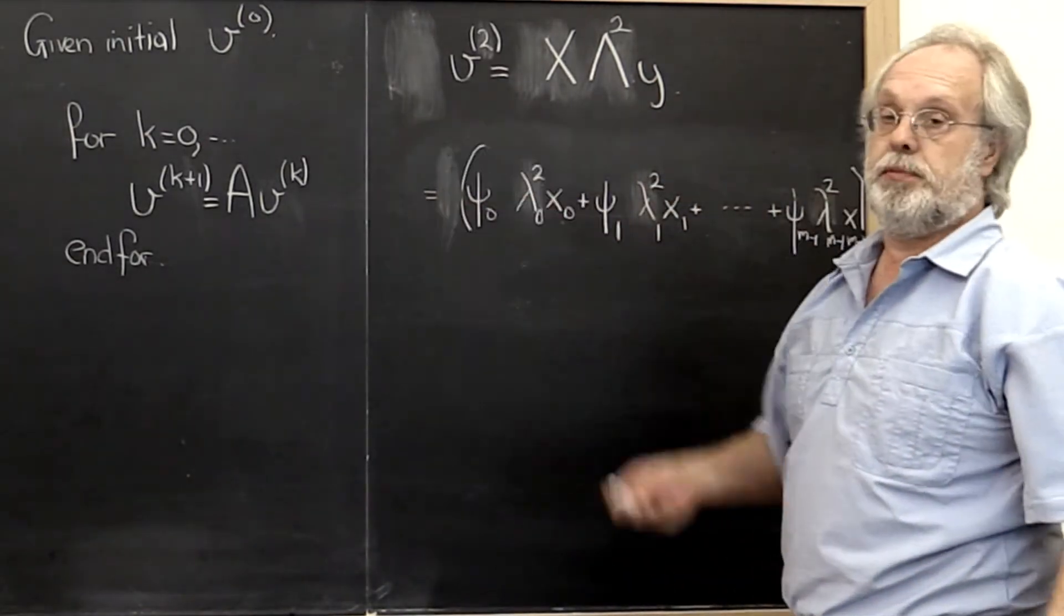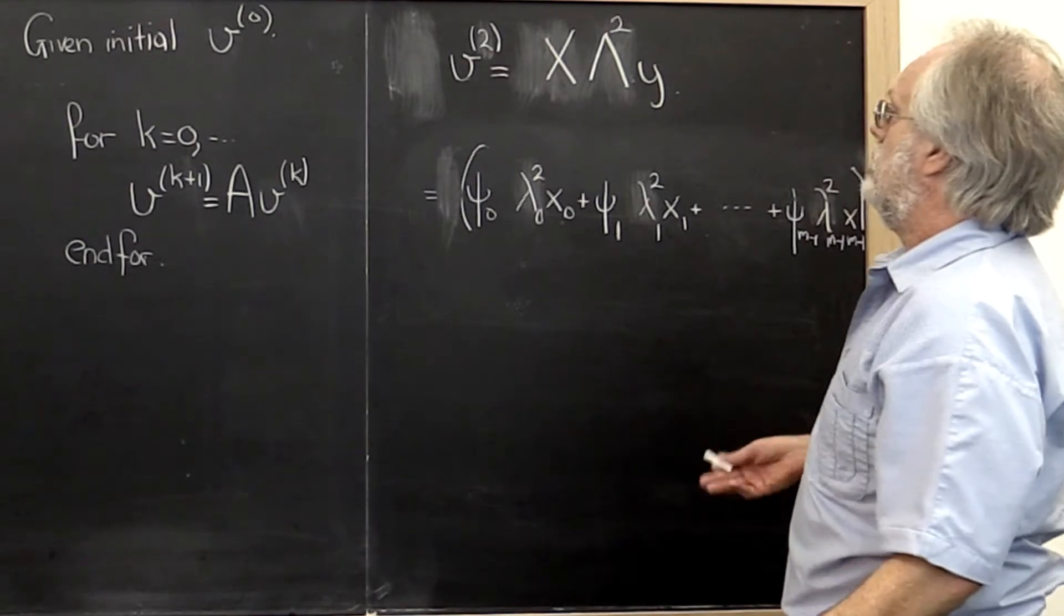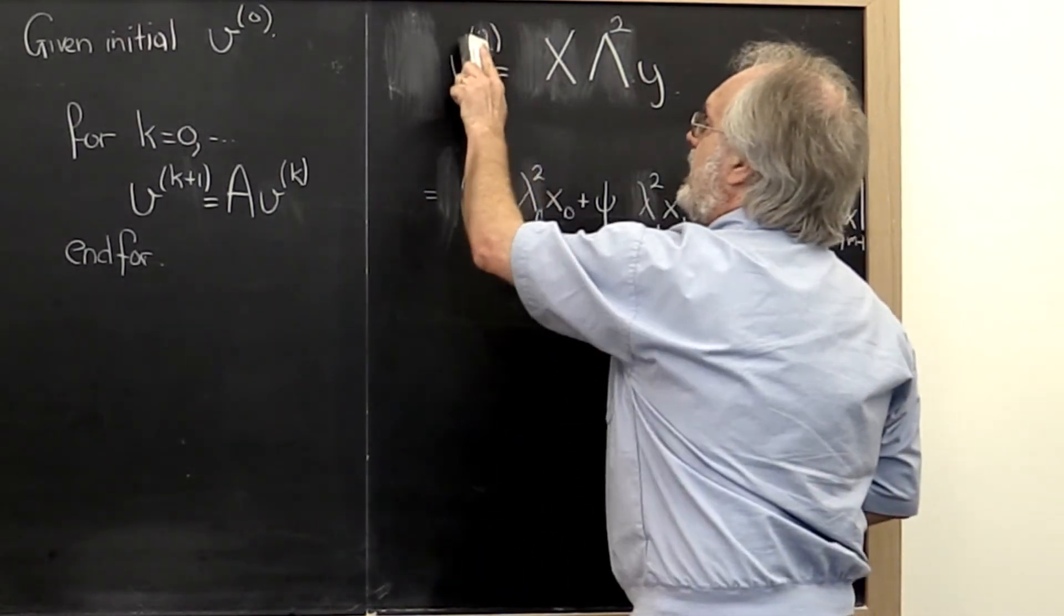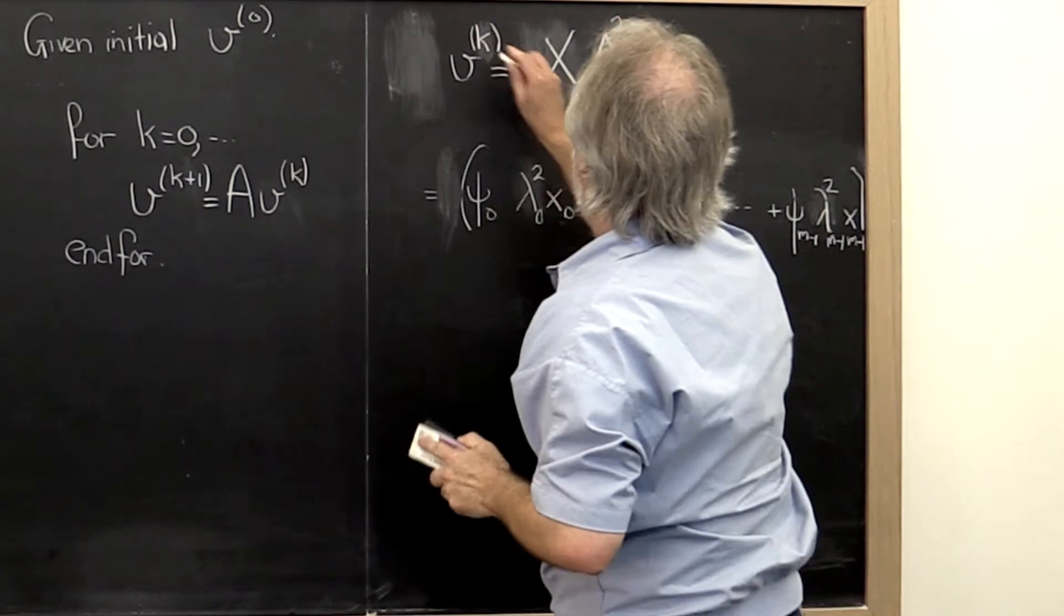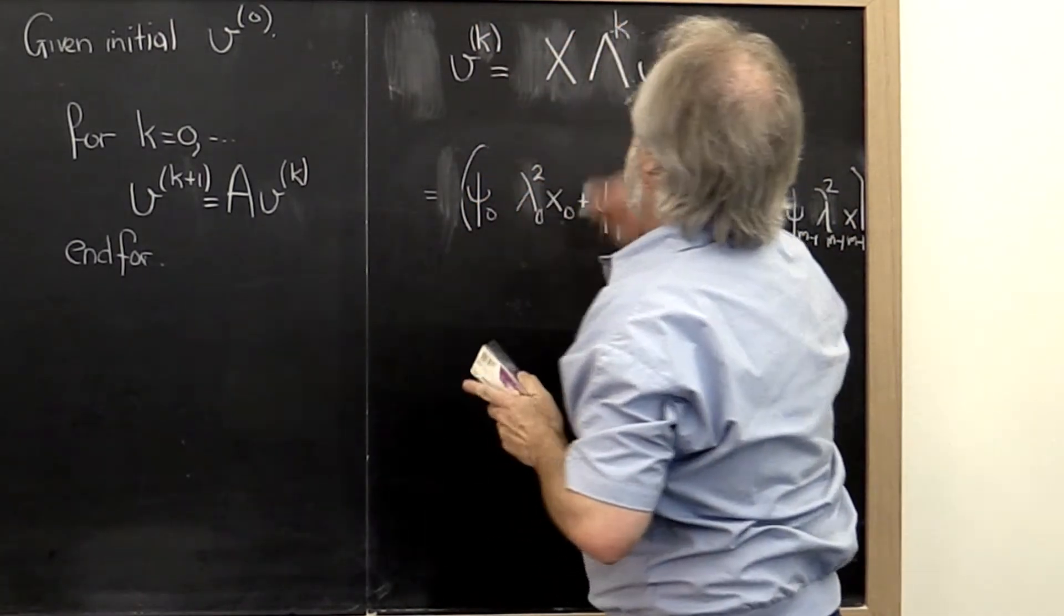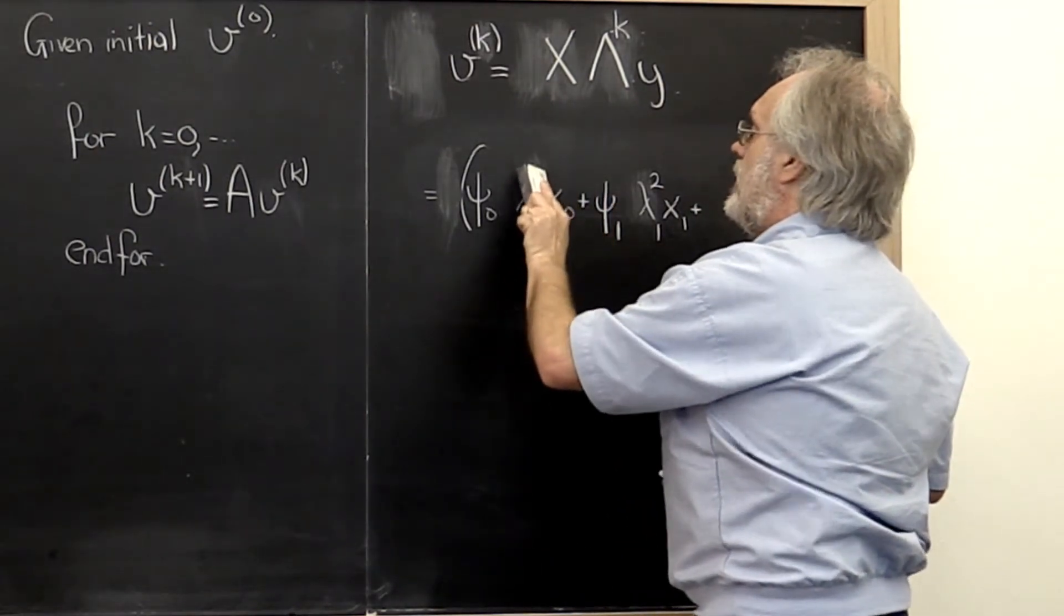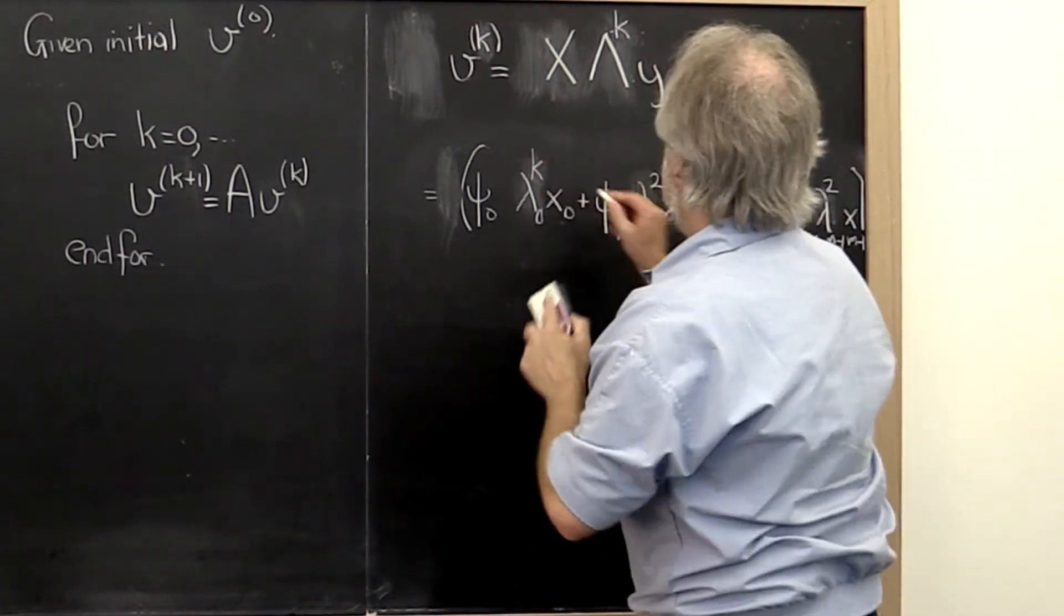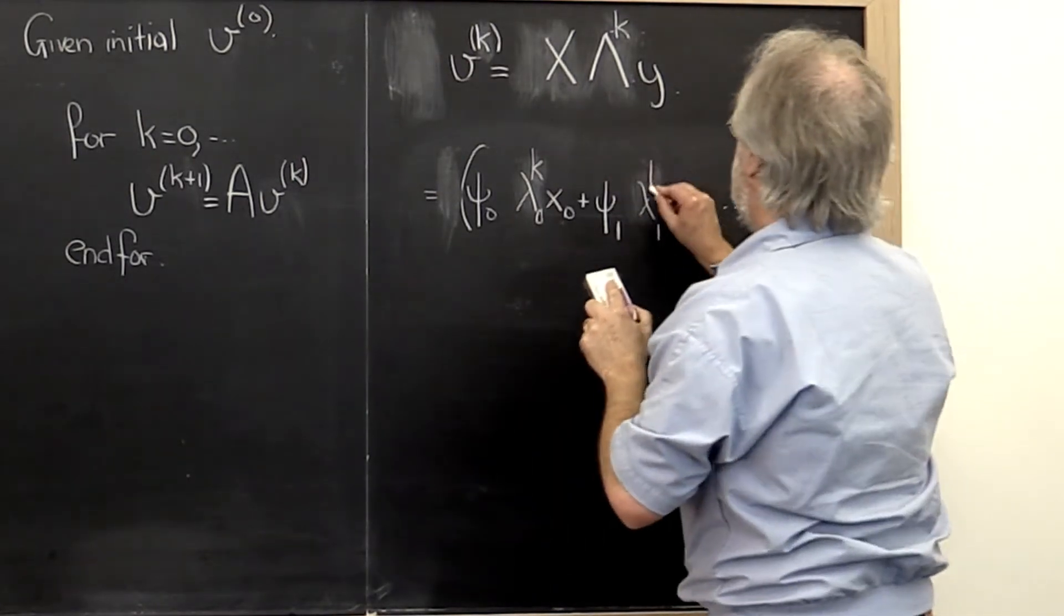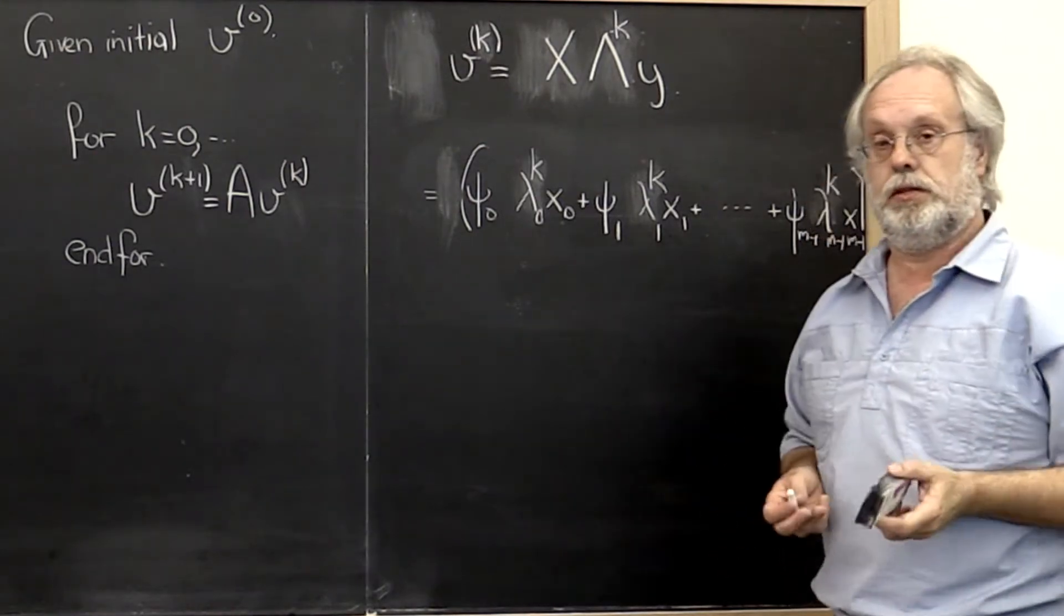And we go back to the top of the loop. And if you work it out, you notice that after k such iterations, this holds vk. This lambda is now raised to the kth power. And each individual lambda here is raised to the kth power.